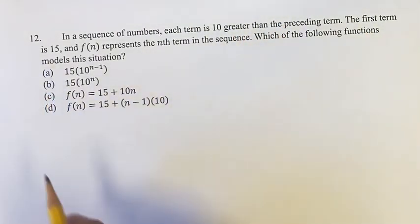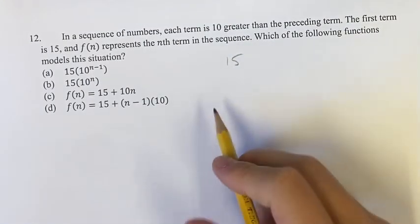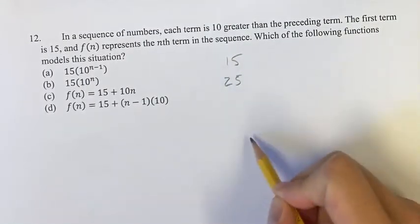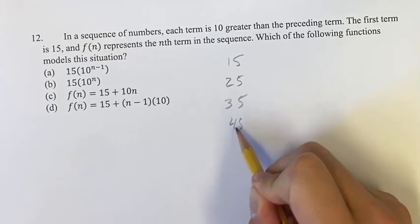So the first term is 15, the next term is going to be 10 greater, which is 25, then 35, 45, and so on.